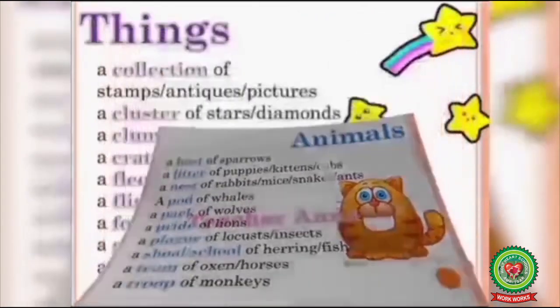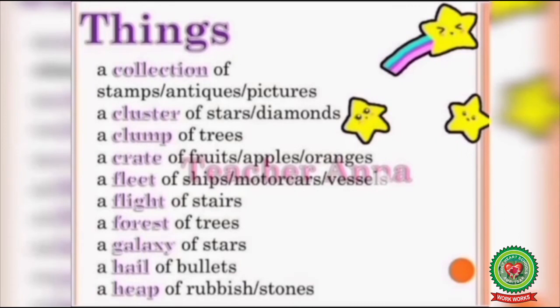Now, for things, look at these examples: a collection of stamps, a cluster of stars, a clump of trees, a crate of fruits. Similarly, a fleet of ships means a group of ships, a flight of stairs means a group of stairs, a forest of trees means a group of trees, a galaxy of stars means a group of stars, a hail of bullets means a group of bullets, and a heap of rubbish means a group of rubbish.